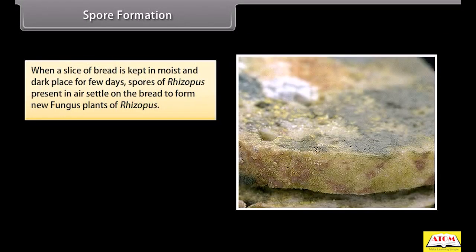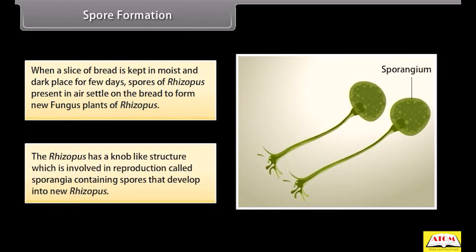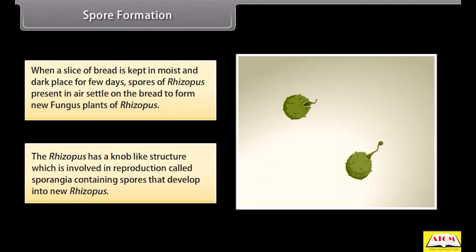When a slice of bread is kept in a moist and dark place for a few days, spores of Rhizopus present in the air settle on the bread to form new fungus plants. The Rhizopus has a knob-like structure involved in reproduction called sporangia, which contain spores that develop into new Rhizopus plants.